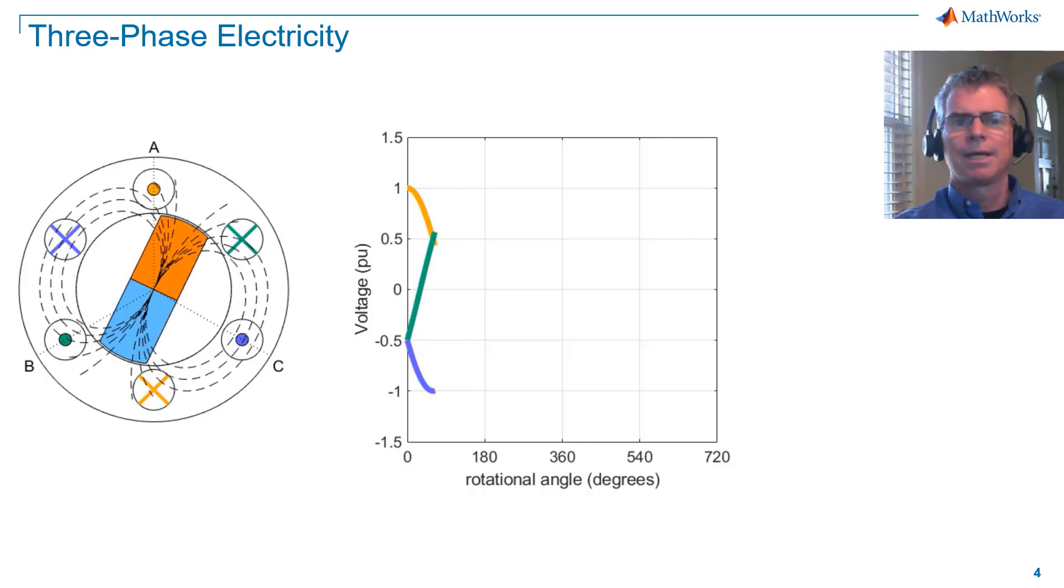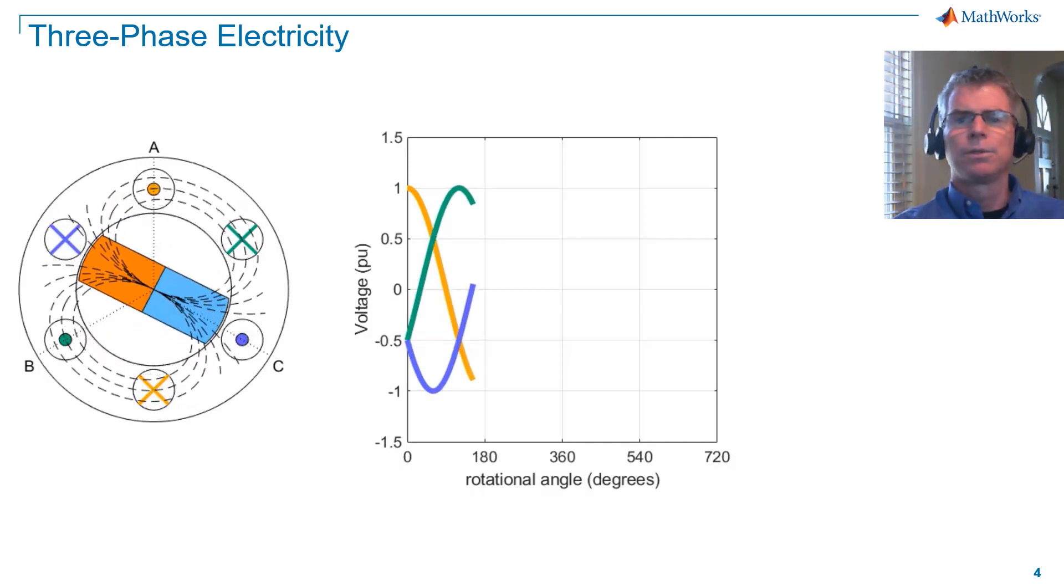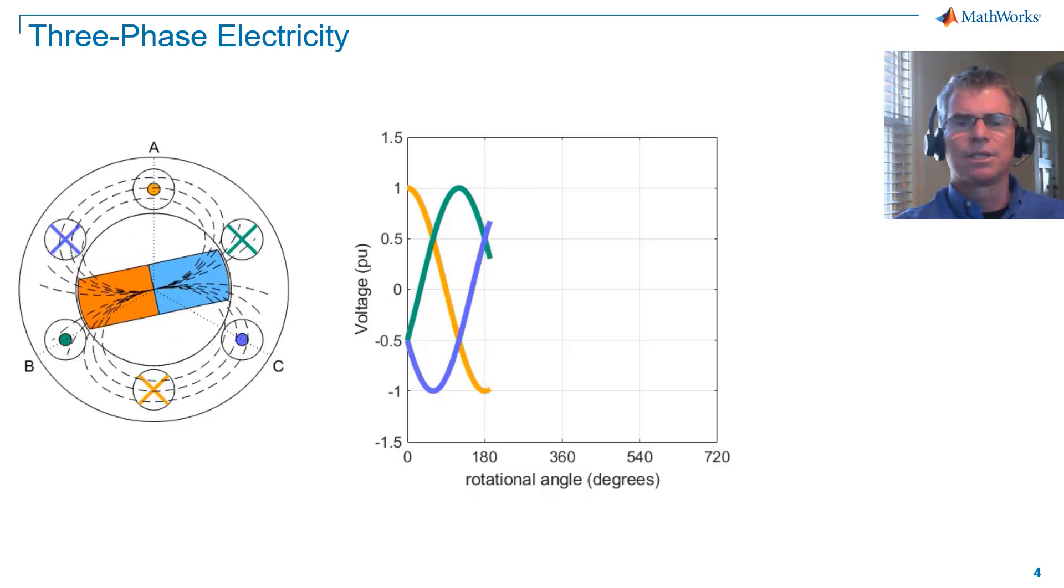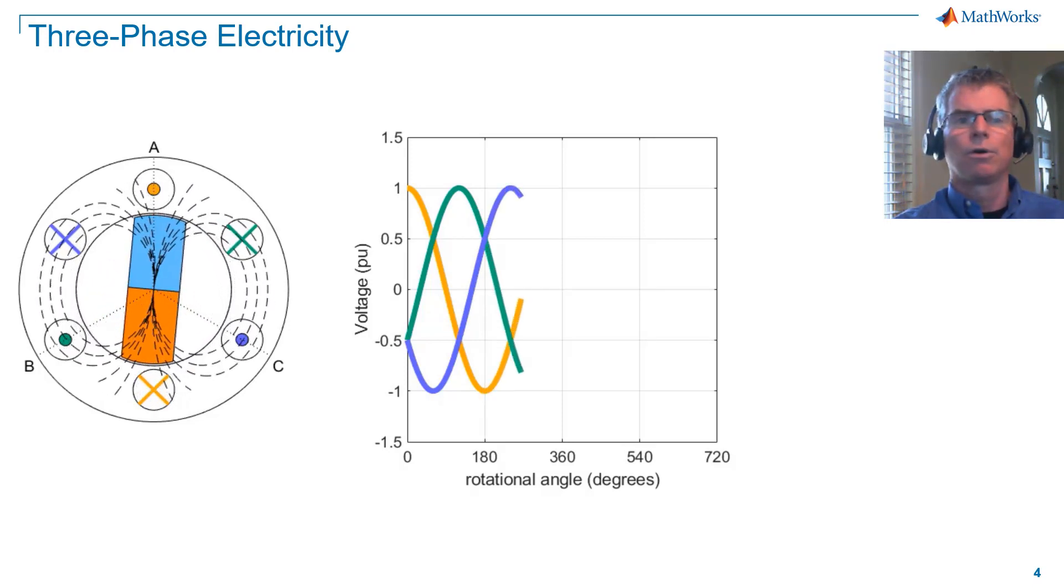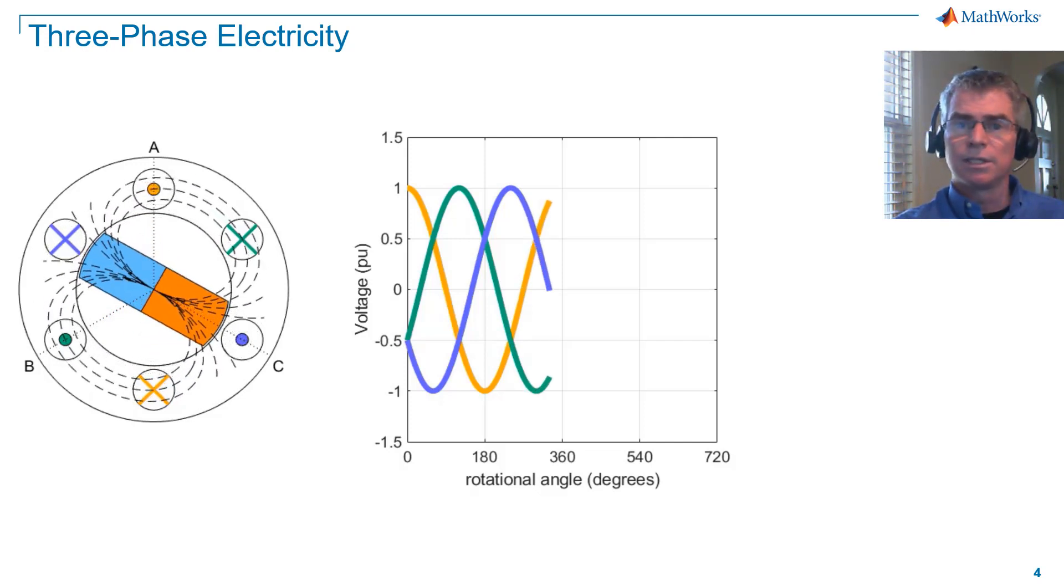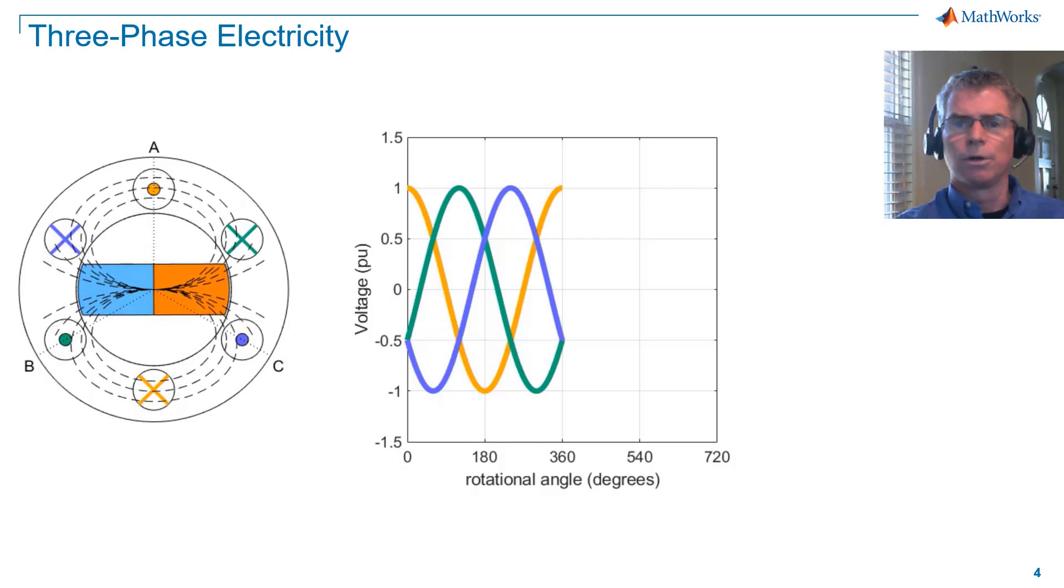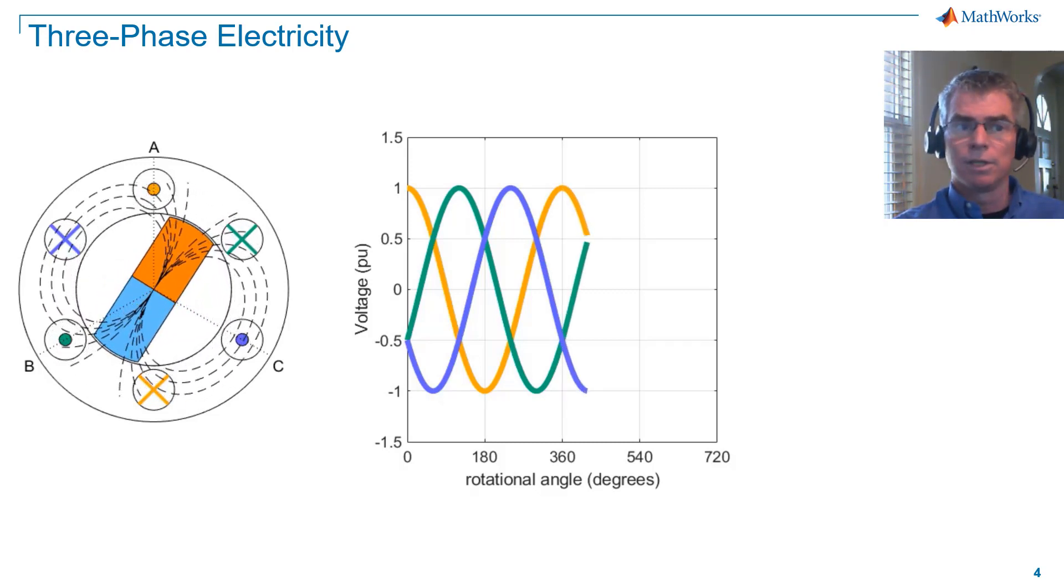If we now start rotating the magnet, we see that the three voltages are formed. The voltages have equal magnitudes and are separated by 120 degrees. The voltage on coil B lags the voltage on coil A by 120 degrees. And the voltage on coil C lags the voltage on coil A by 240 degrees.